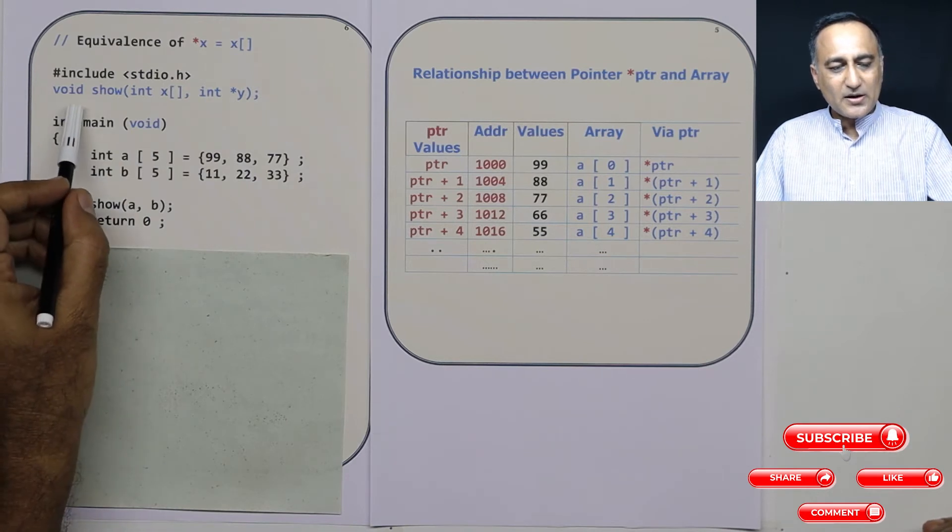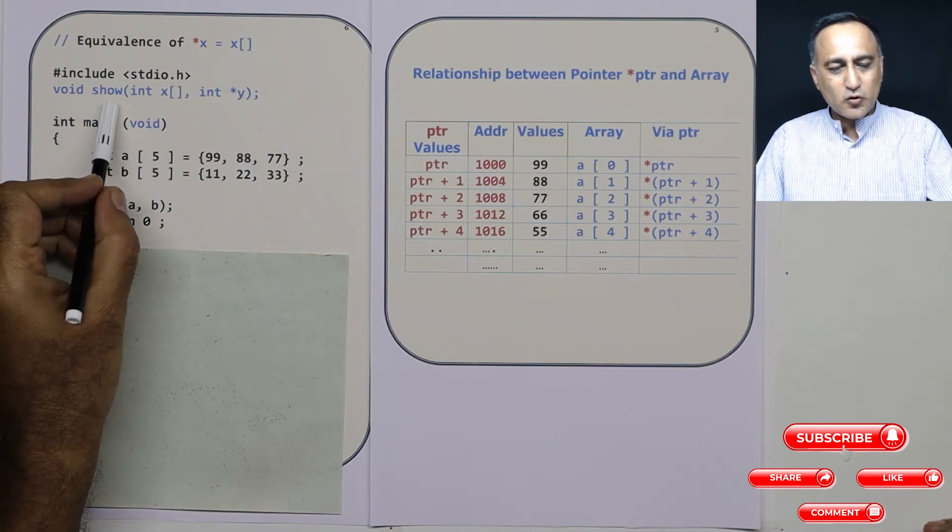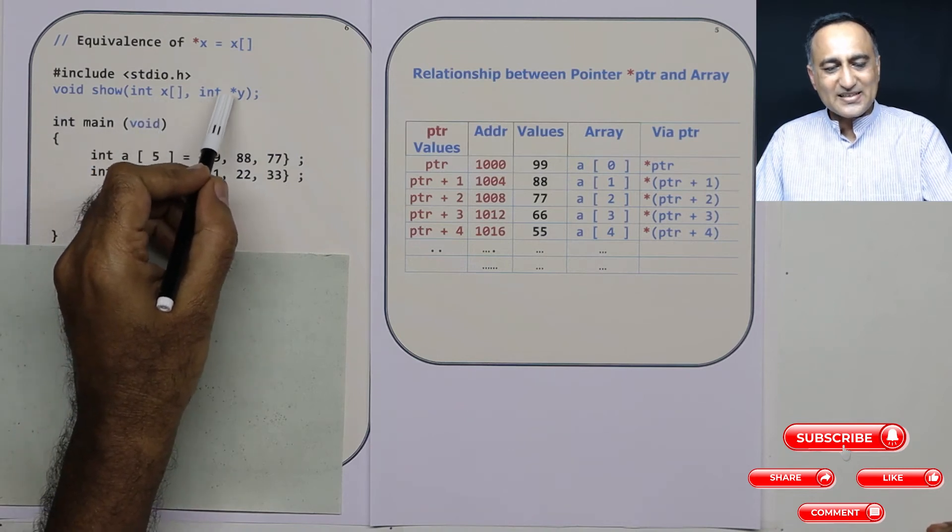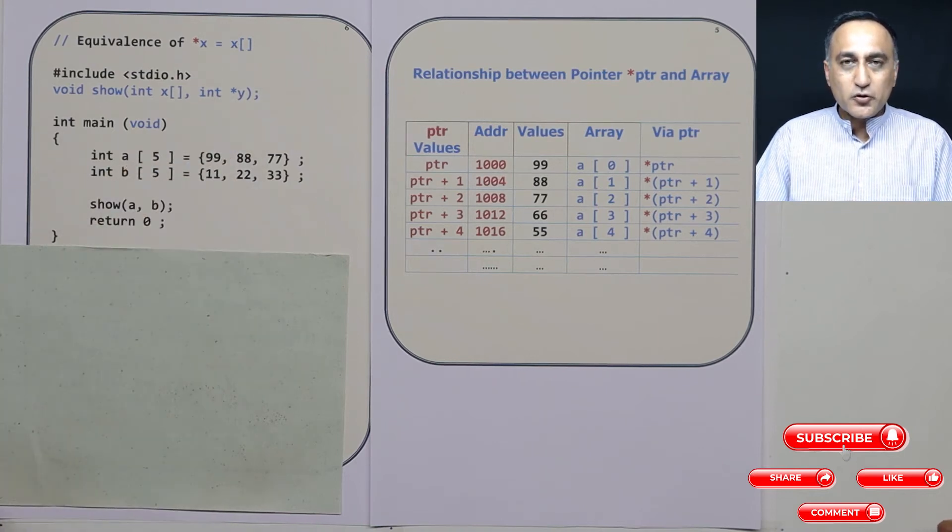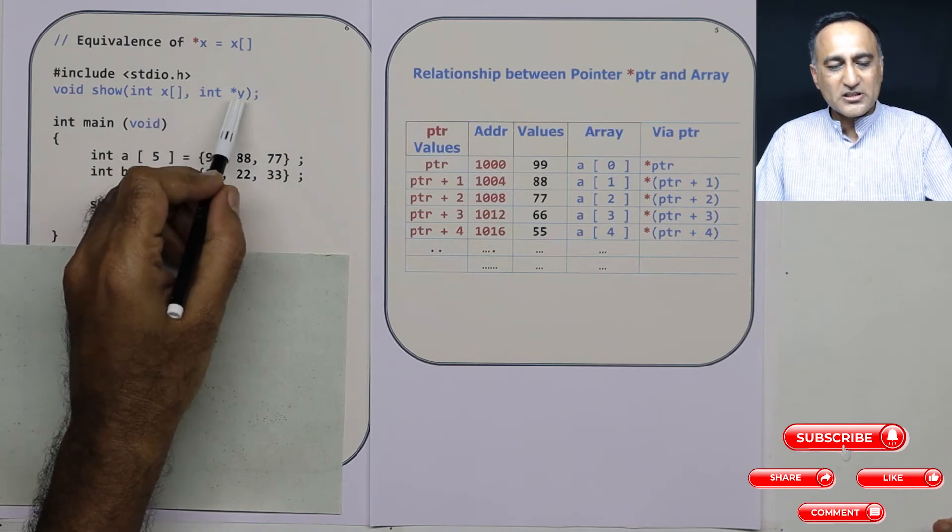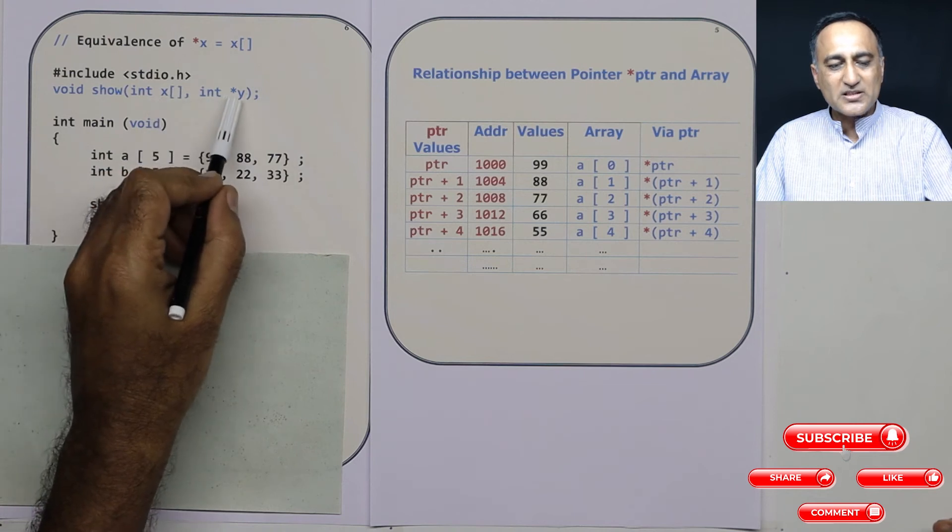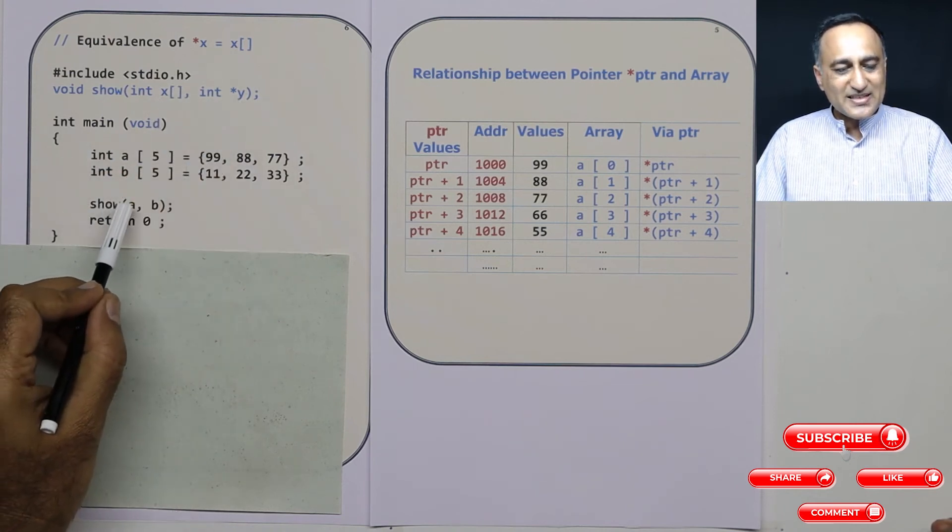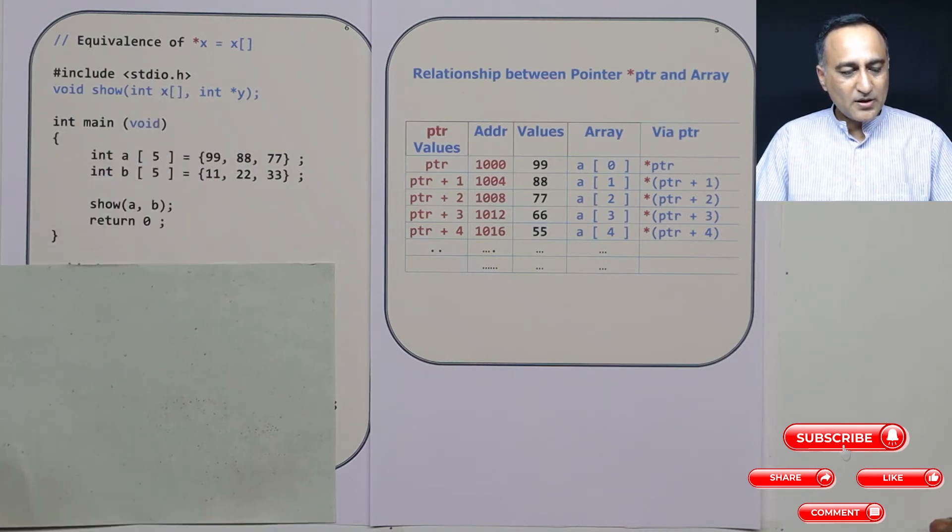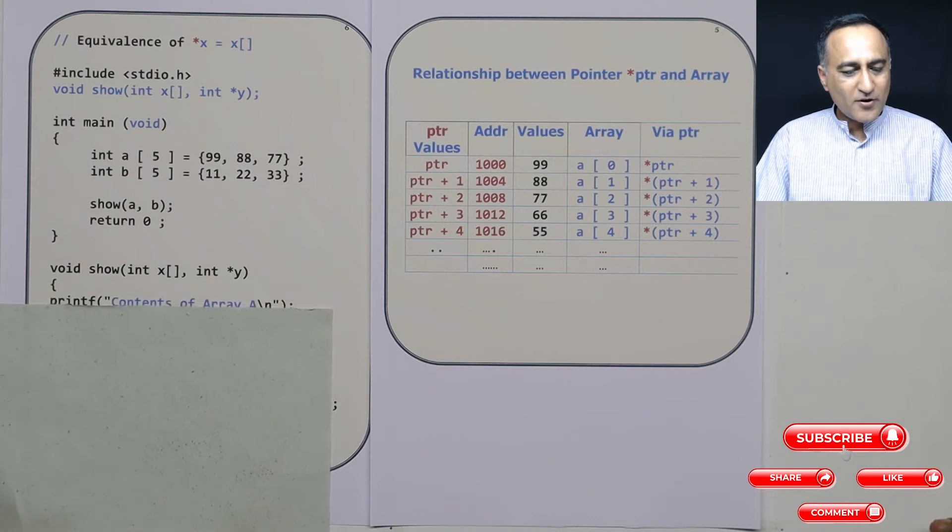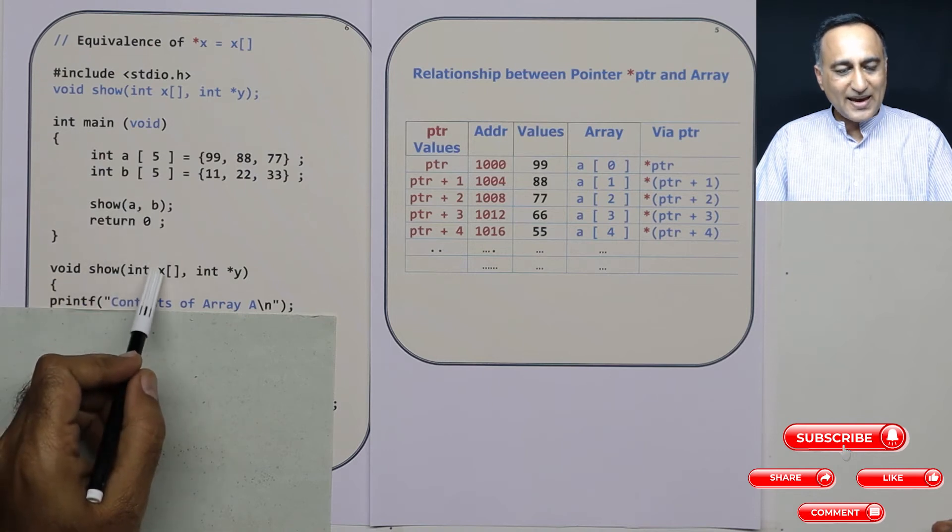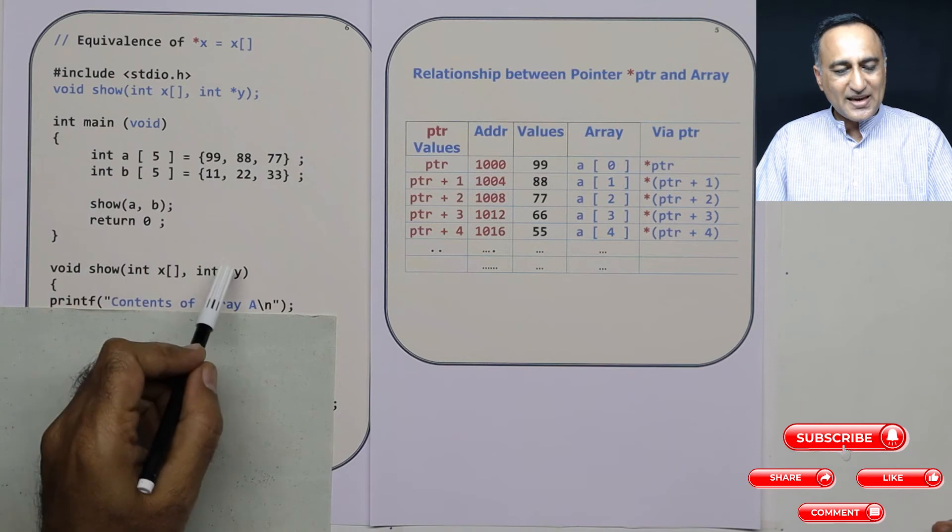Now if you see, I have declared a prototype of a function called show which has int x as a single dimension array and it says int star y. What I am going to try to show you here is whether you declare an array parameter as x array operator or star y, what you can do with x you can do the same thing with y. So what is happening is address of a is going to x, address of b is going to y. So in this show function, I have declared the first parameter which is going to refer to a as x of array operator and b as star y.